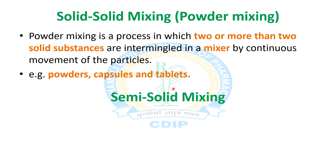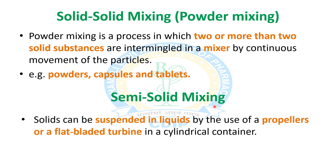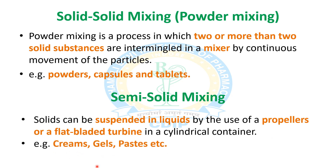After solid-solid mixing, the third type is semi-solid mixing. Here, solids are suspended in liquids by the use of propellers or flat-bladed turbines in a cylindrical container. When solids are suspended over liquids, it forms a semi-solid mixture. Examples are creams, gels, and pastes.